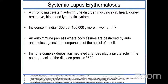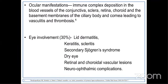Looking at the literature, systemic lupus is a chronic multi-system autoimmune disease which involves skin, heart, kidney, brain, eye, blood, and lymphatic system — literally any system of the body. The incidence is almost 1,300 in 1,000,000 patients, more seen in women. It is an autoimmune process where body tissues are destroyed by autoantibodies against components of the nuclei of a cell. Immune complex deposition plays a pivotal role in the pathogenesis, with deposition in the blood vessels of the conjunctiva, sclera, retina, choroid, and the basement membrane of the ciliary body and cornea, leading to vasculitis and thrombosis. Ocular involvement is seen in almost one-third of SLE patients, in the form of lid dermatitis, keratitis, scleritis, secondary Sjogren's syndrome, dry eye, retinal and choroidal vascular lesions, and neuro-ophthalmic complications.